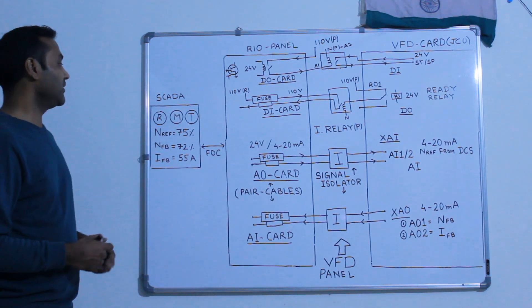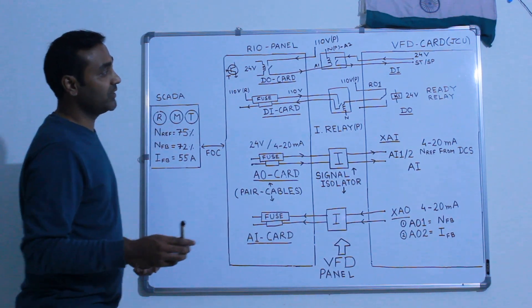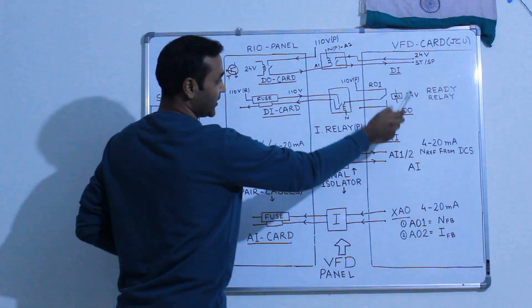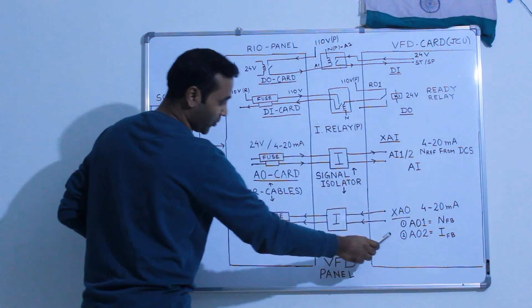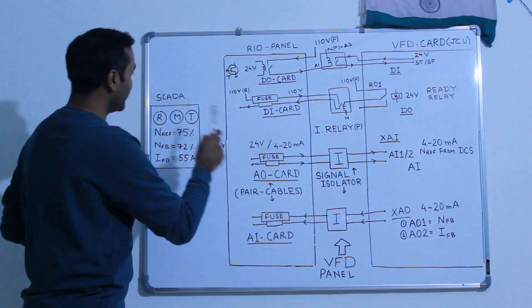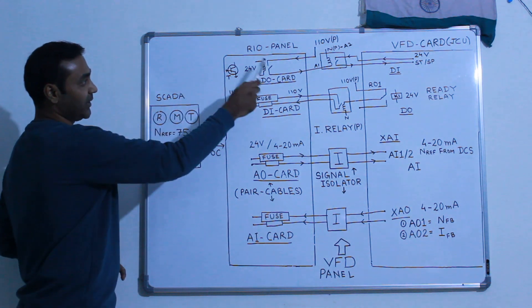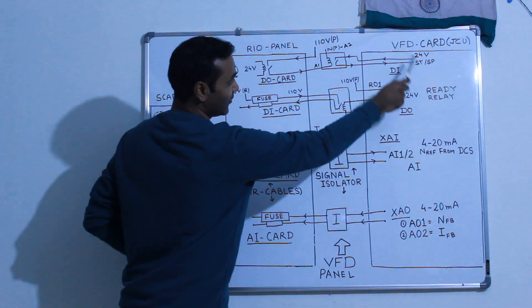Hello everyone, welcome back to my channel. In this video we are going to cover how four important signals - digital input, digital output, analog input and analog output - flow between SCADA or PLC to RIO panel and to VFD, particularly VFD card.